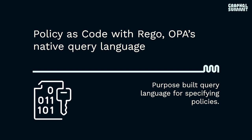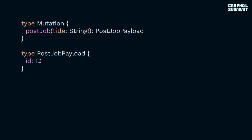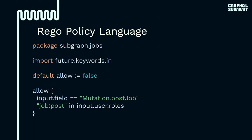First, let's look at a very simple schema we'll use throughout the rest of this presentation. We have a single mutation defined named post-job. And then just an example of how you might have an operation that makes use of that mutation. This is a very simple Rego policy. The very first line defines a package named subgraph.jobs. One way you may choose to use Open Policy Agent is to allow subgraph authors to own their policy — the approach I'm demonstrating here — with perhaps a policy per subgraph.